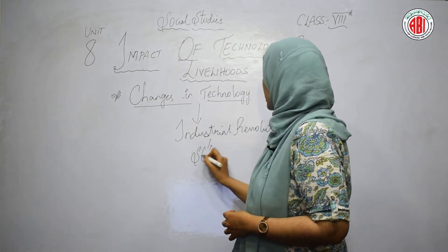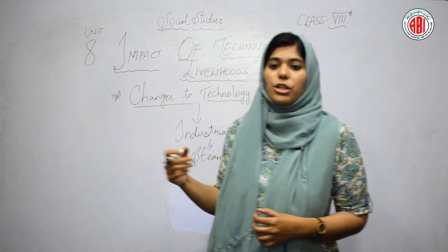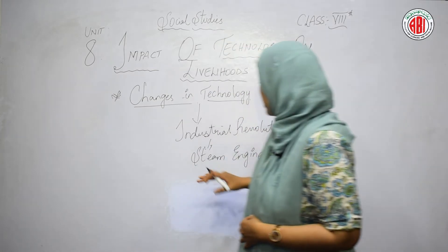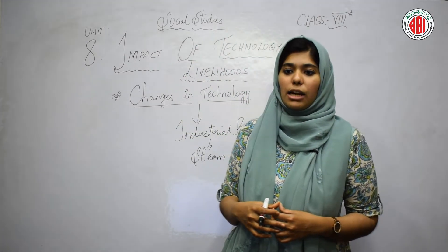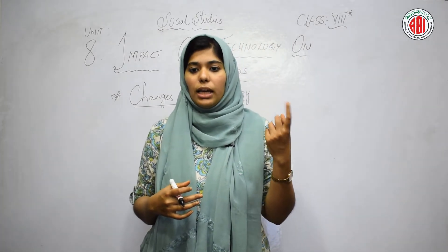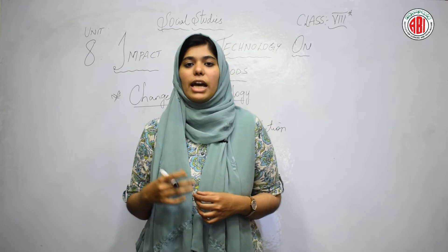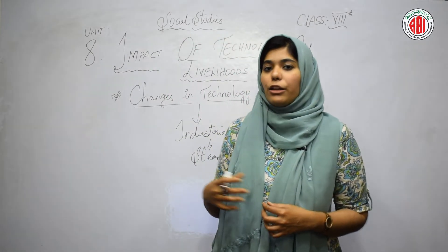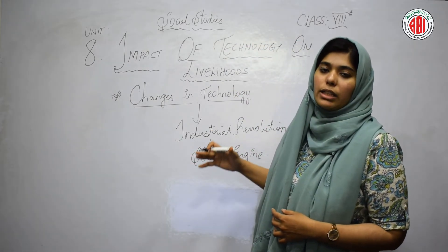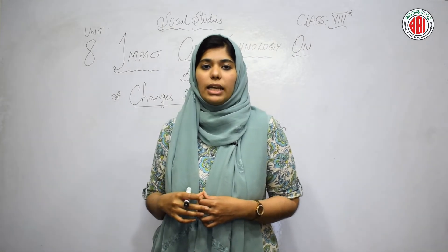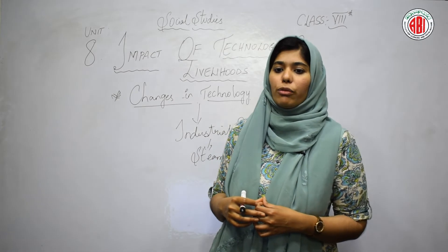The first major introduction of the Industrial Revolution in the 18th and 19th centuries was the steam engine, introduced by the British. The steam engine was used to change many production processes in factories. Later, with the invention and discovery of new sources of energy such as electricity, factories as we see them today emerged. New forms and methods were introduced to advance technology — from steam engines to electricity-powered industries.